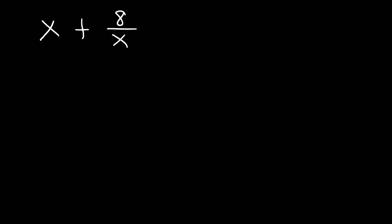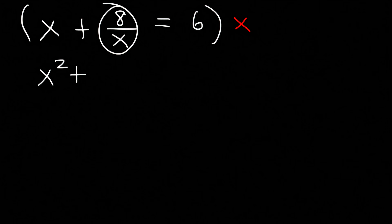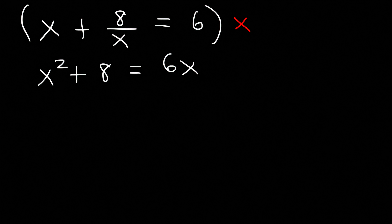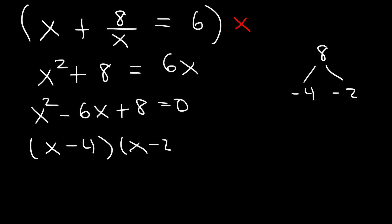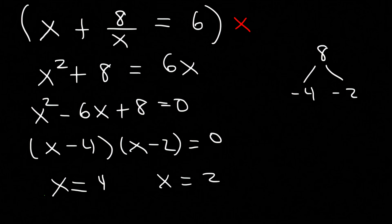Here's the next problem: x plus 8 over x is equal to 6. Feel free to pause the video and work on this example. We're going to multiply both sides by x. So x times x is x squared, and 8 over x times x — the x variables cancel — leaving just 8. And 6 times x is 6x. Now let's move 6x to the left side as negative 6x. We can factor: what two numbers multiply to 8 but add up to negative 6? That's negative 4 and negative 2. So it's x minus 4 times x minus 2, and x is equal to positive 4 and positive 2.